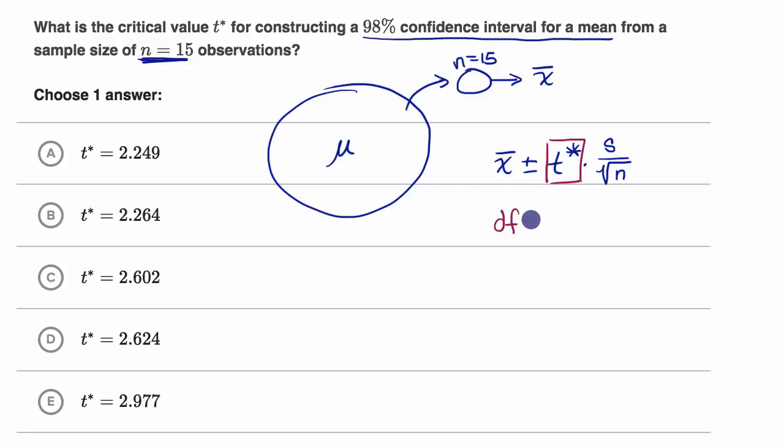And your degree of freedom is going to be your sample size minus one. So in this situation, our degree of freedom is going to be 15 minus one. So in this situation, our degree of freedom is going to be equal to 14.